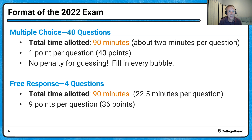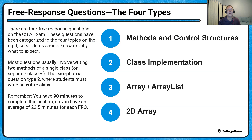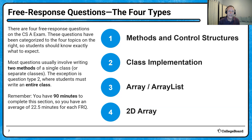It's one point per question, and there's no penalty for guessing, so make sure you fill in every bubble. For the free response section, there are four questions. You have 90 minutes for those, so about 22 and a half minutes per question, and each question is graded on a nine-point scale. The four types of questions are: method and control structures, class implementation, arrays and ArrayLists, and 2D arrays. These four topics are always consistent on the AP exam.